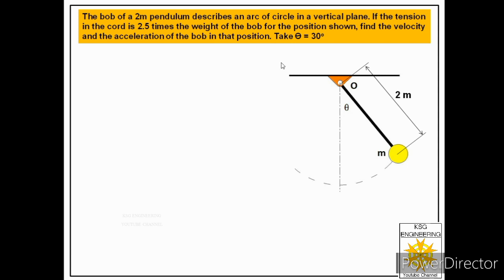We have to find the velocity and acceleration of the bob in this position. It is mentioned that tension in the chord is 2.5 times the weight of the bob. To solve this problem, the very first step is to draw the free body diagram of the bob. In order to draw the free body of the bob, we will first represent the bob on paper.